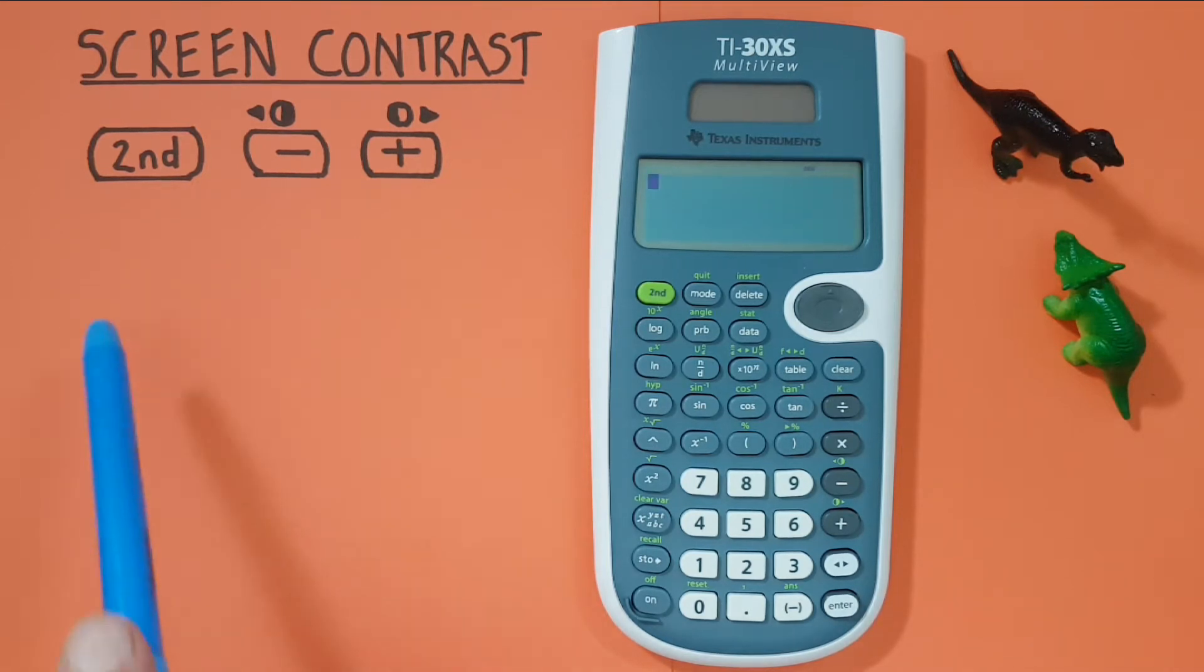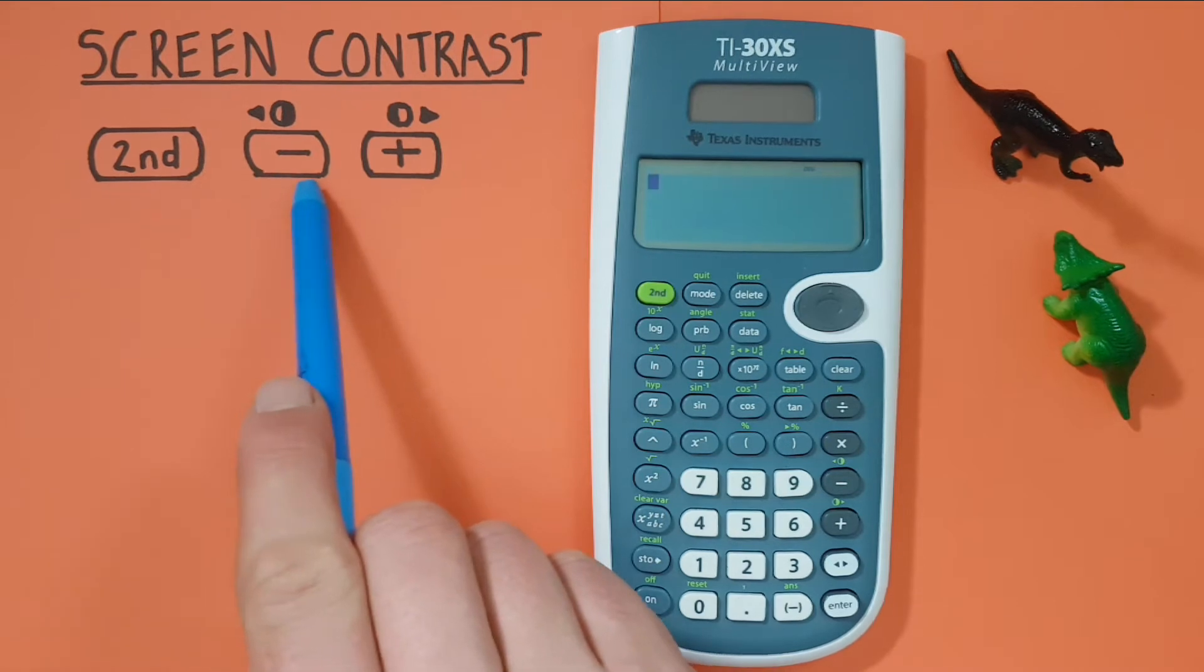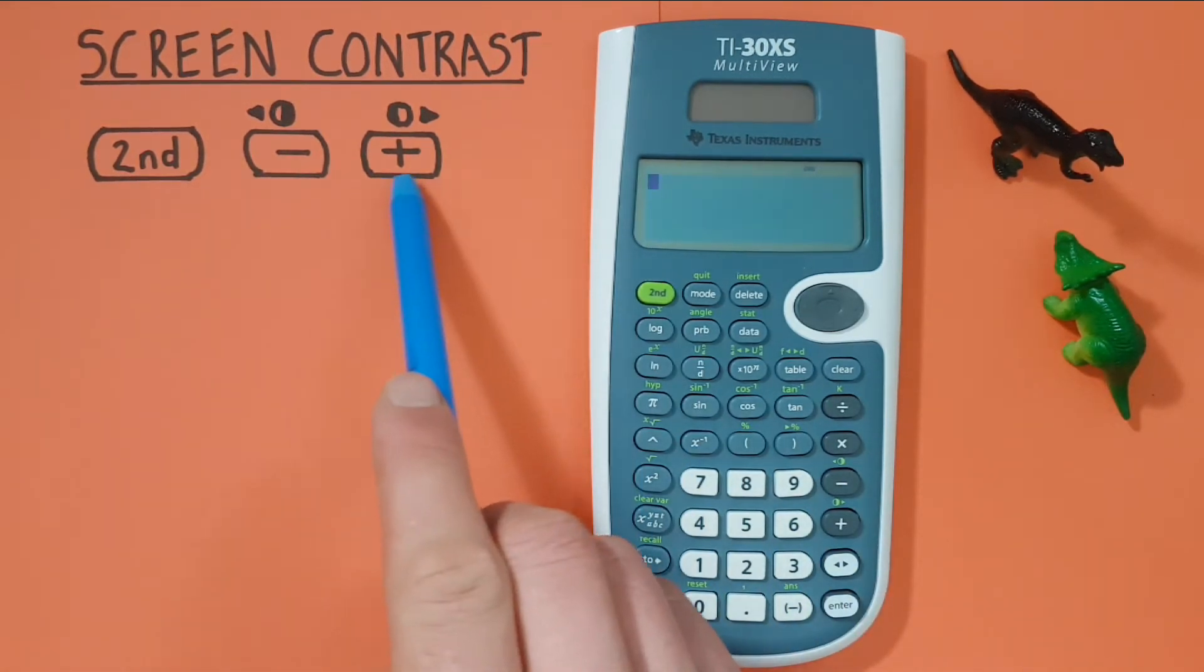To do this, we'll be using the second function key located here, as well as the subtraction key located here, and the addition key located here.